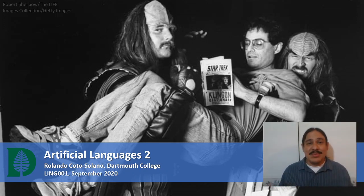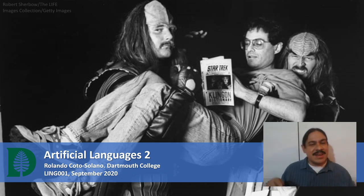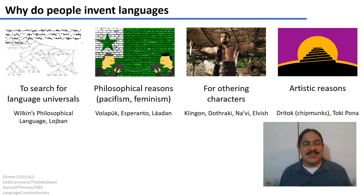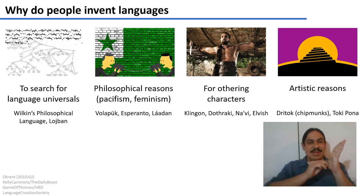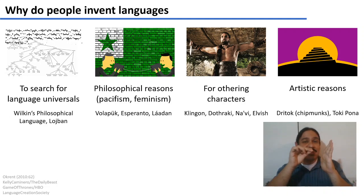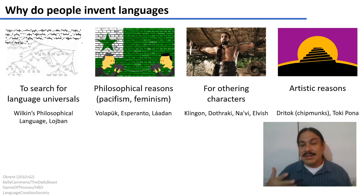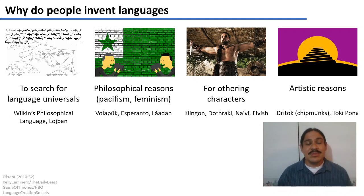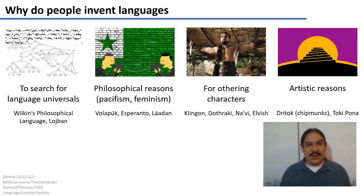In the last video we looked at a few examples of artificial or constructed languages — Wilkins' philosophical language and Esperanto — and the reasons why people made them. Here we're going to look at a few more examples. There are many reasons why people make these: it's an art, they might be looking for a way to turn language into mathematical functions, or to find universality — a way to speak that is common to all humans. People have also built languages because they have some ideal or belief, for example pacifism for Esperanto.